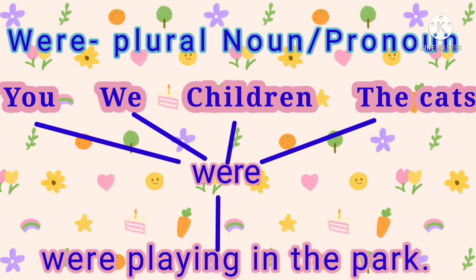So what sentences can we frame here? Like: you were playing in the park; we were playing in the park; children were playing in the park; the cats were playing in the park. Only the noun and pronouns are changing — otherwise the whole sentence is framed using were.